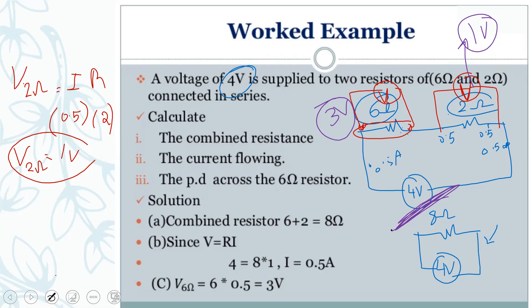There is no voltage lost. The circuit has four volts, so the voltage is distributed or divided among the resistances. When you sum them back up, you get the same four volts. That is why we call the series circuit a 'voltage divider.'